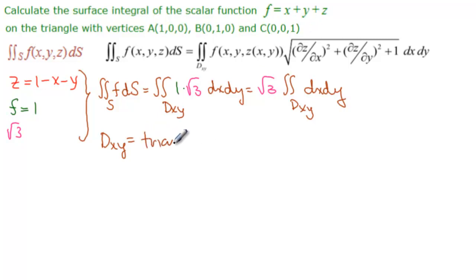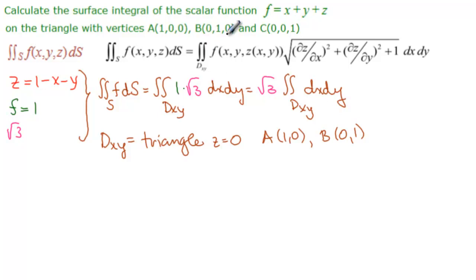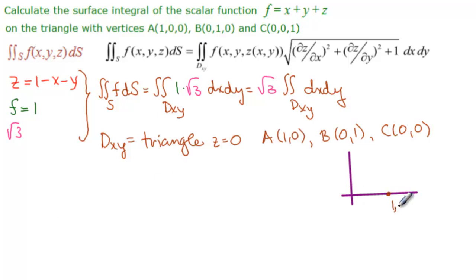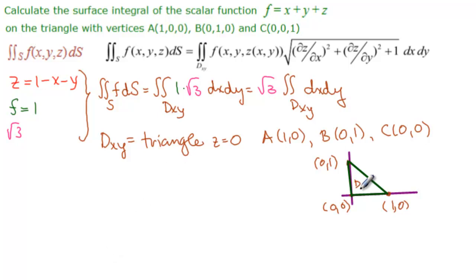The projection of this triangle onto the XY plane gives a triangle with points where z equals 0: A projects to (1,0), B projects to (0,1), and C projects to (0,0). So we're looking at this right triangle in the XY plane as our domain D_{xy}.